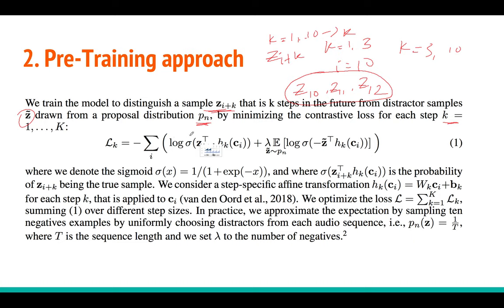You sum these two probabilities and take the negative, because we want to minimize the loss during training using stochastic gradient descent — we take the negative of this term. This gives the loss for k equal to 1. If I have capital K = 10, I get 10 different losses: L1, L2, L3, and so on. For the total loss I take the sum or mean of all the losses L_k.